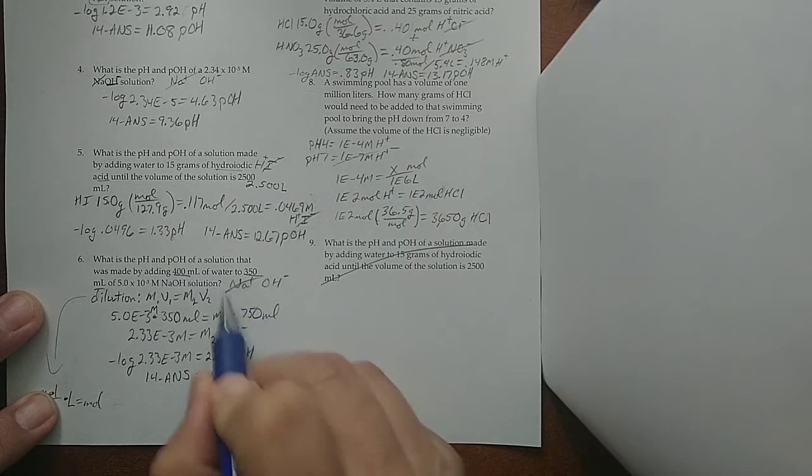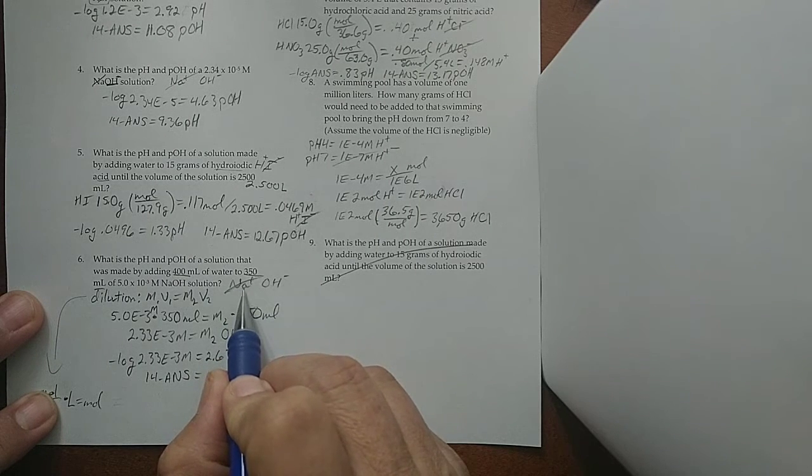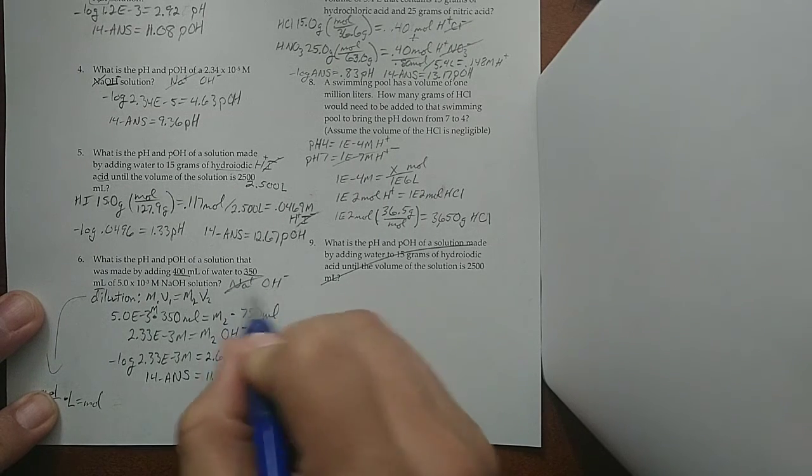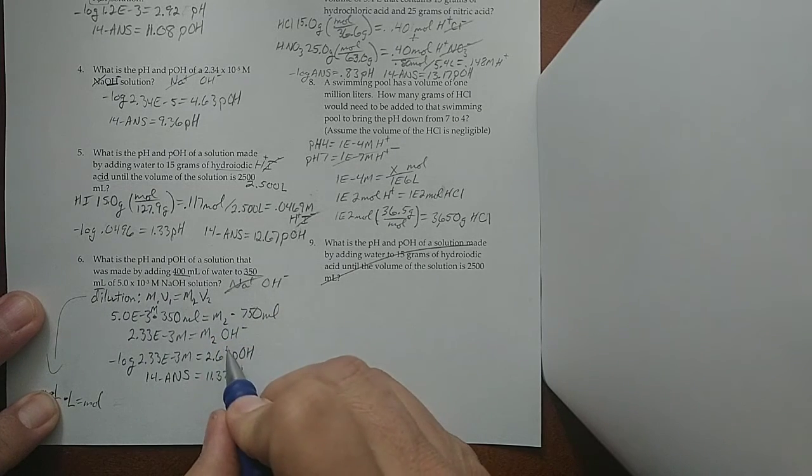And technically, that's the molarity of the NaOH, but it's also just the molarity of the OH⁻. Because one of these overall will get you one of those, which I don't care about, and one of these, which I do care about. So, the molarity overall is also the molarity of the OH⁻.